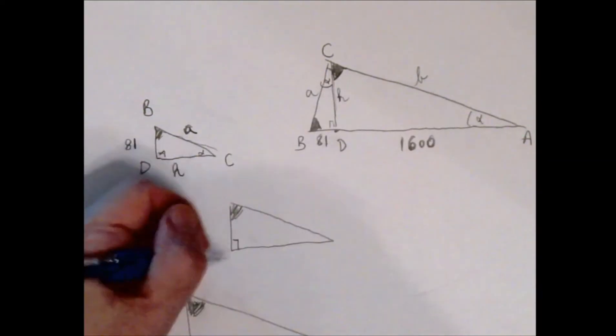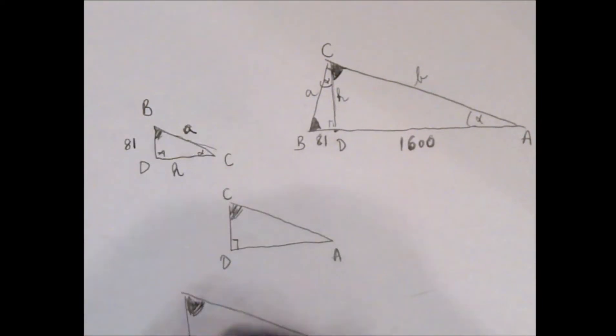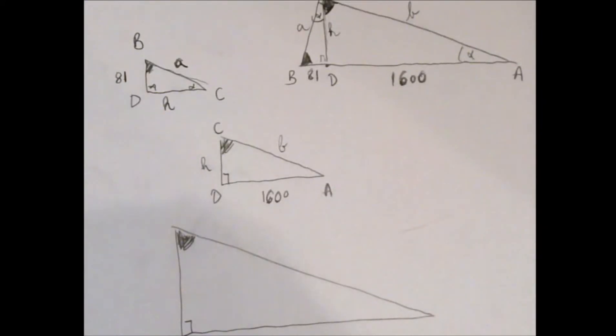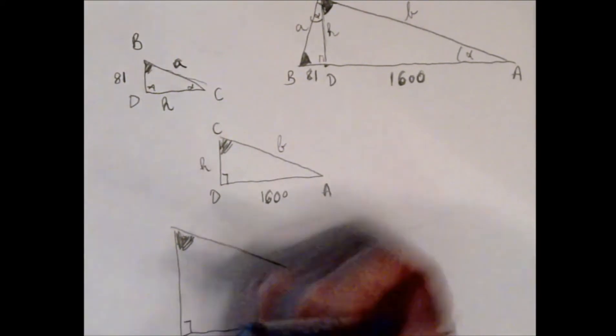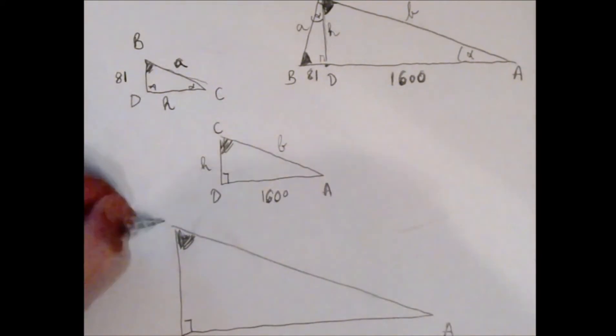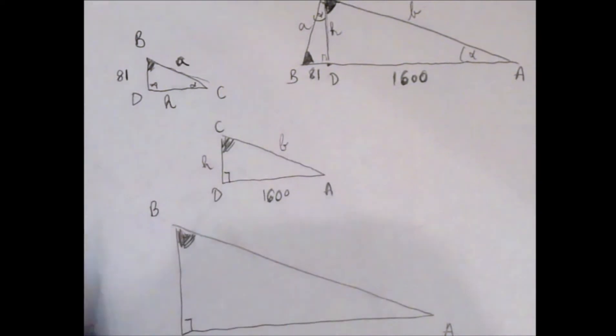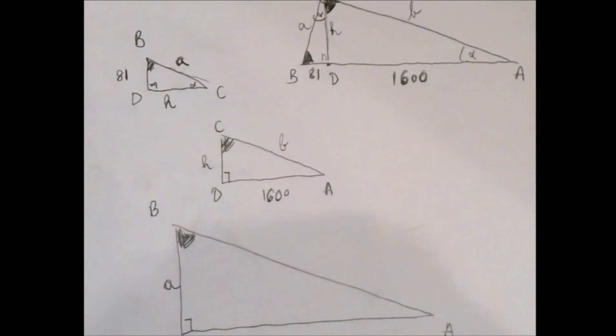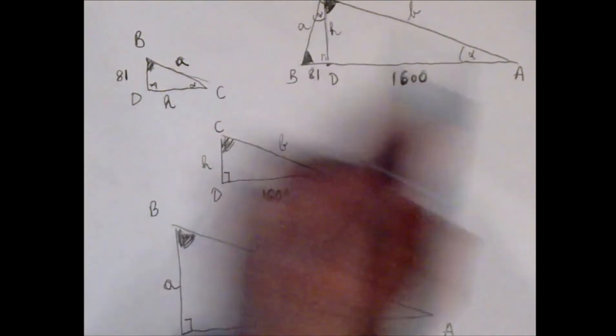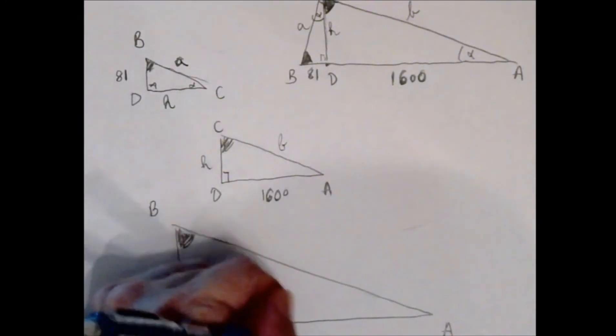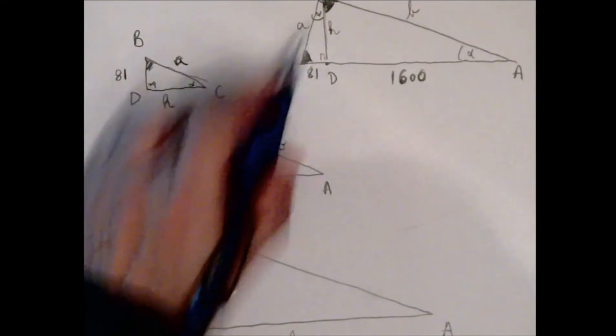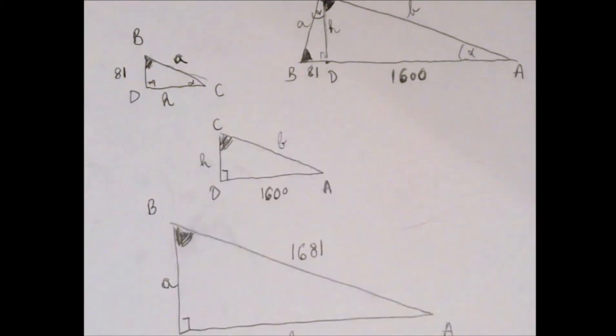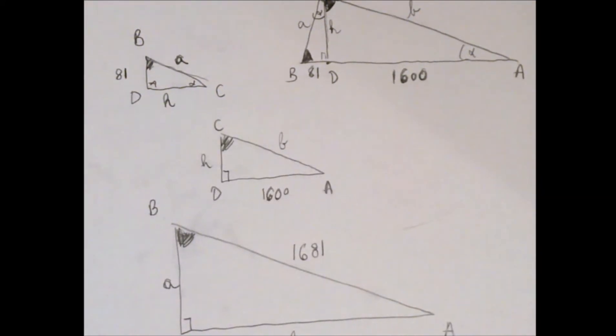This middle triangle is the easiest because it's not rotated at all—corresponding sides are parallel. Finally, the big triangle: at the right angle we have C, at the skinnier angle we have A, at beta we have B. BC is the side labeled a, between A and C is the side labeled b, and opposite C is the side that is 1681.